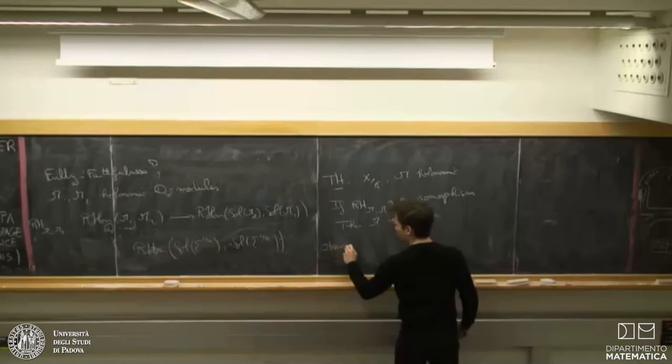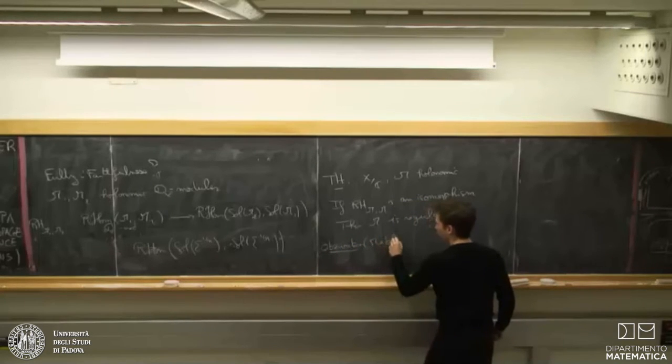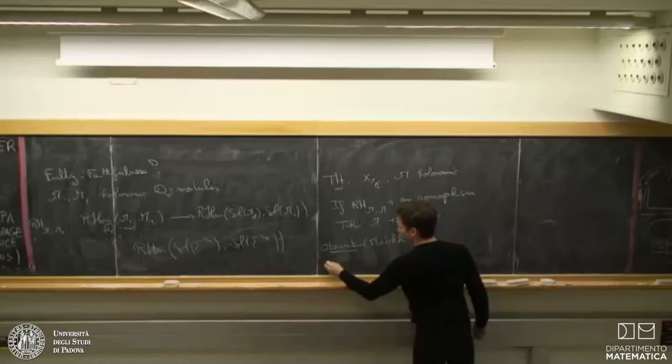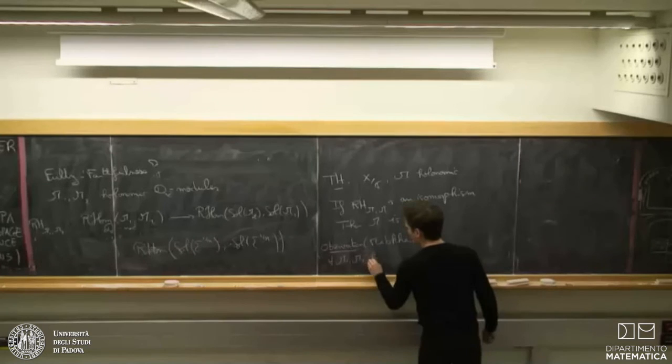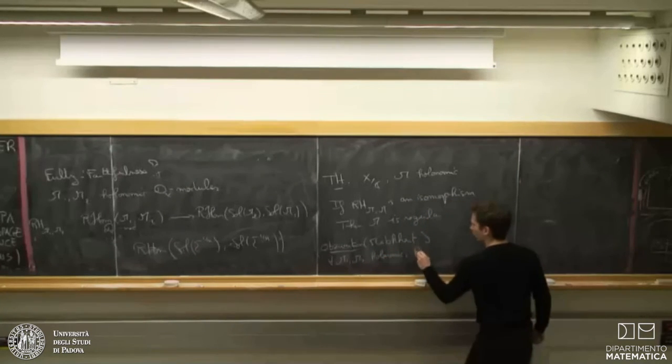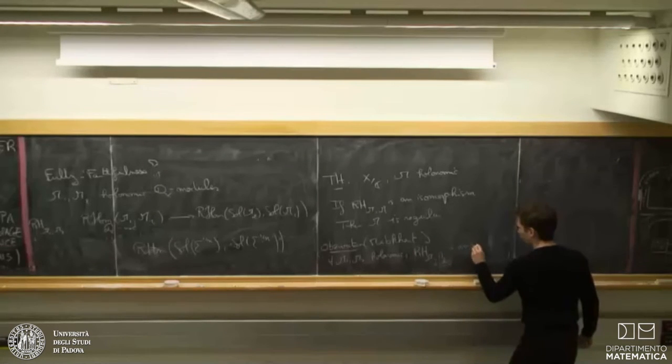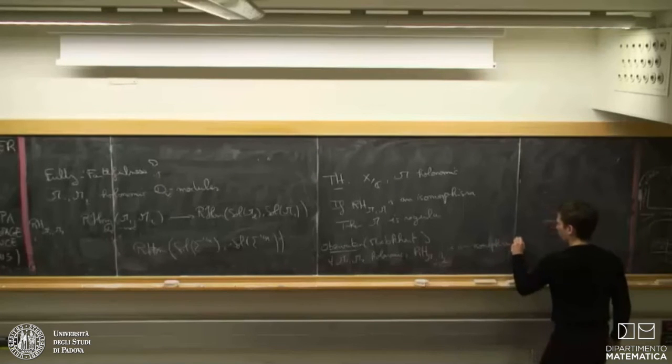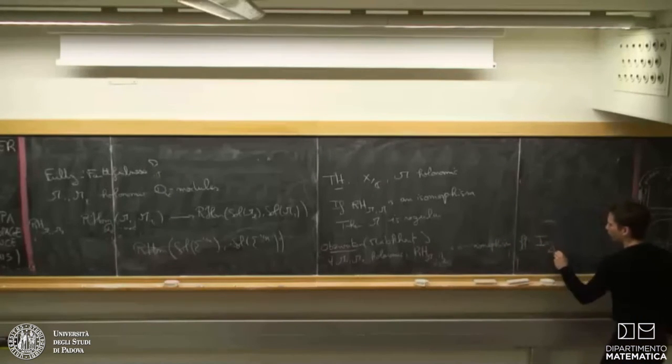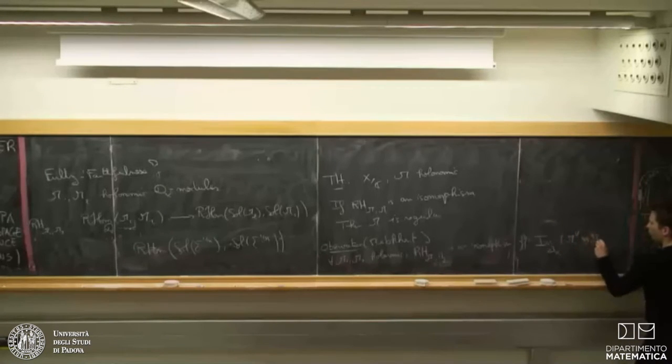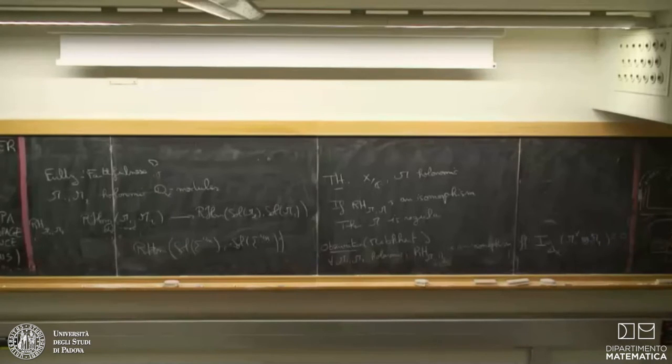And this is the point of view of Mebkhout. So, an observation which is due to Mebkhout, this is for any M1 and M2 holonomic. The Riemann-Hilbert morphism is an isomorphism if and only if the irregularity sheaf along the diagonal of this D-module is zero. And so, with this criterion, you see immediately how we used to prove the fully faithfulness starting from M1 and M2 regular, then this D-module has to be regular. And from this very definition, this has to be zero. So, you get the fully faithfulness for free.